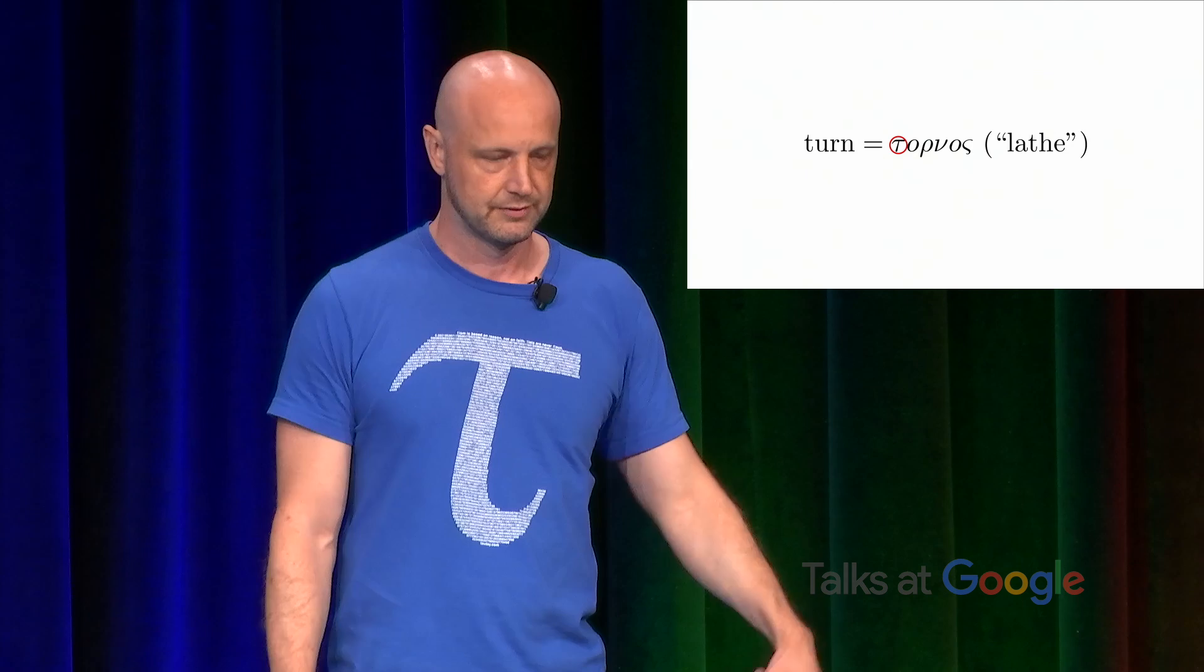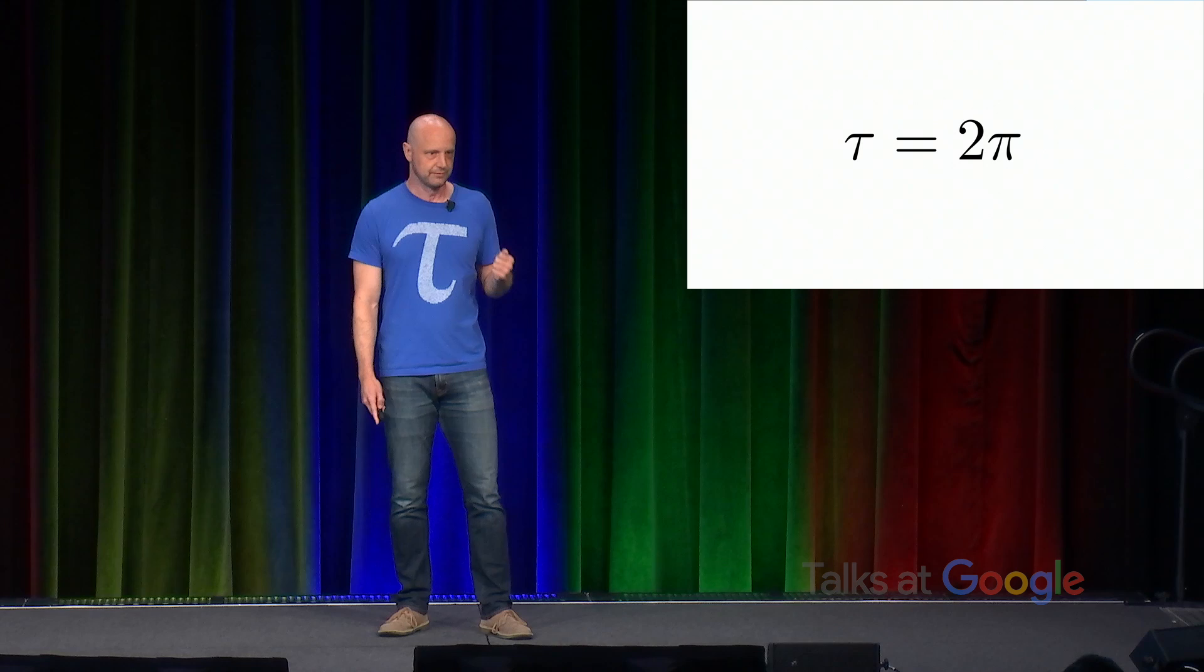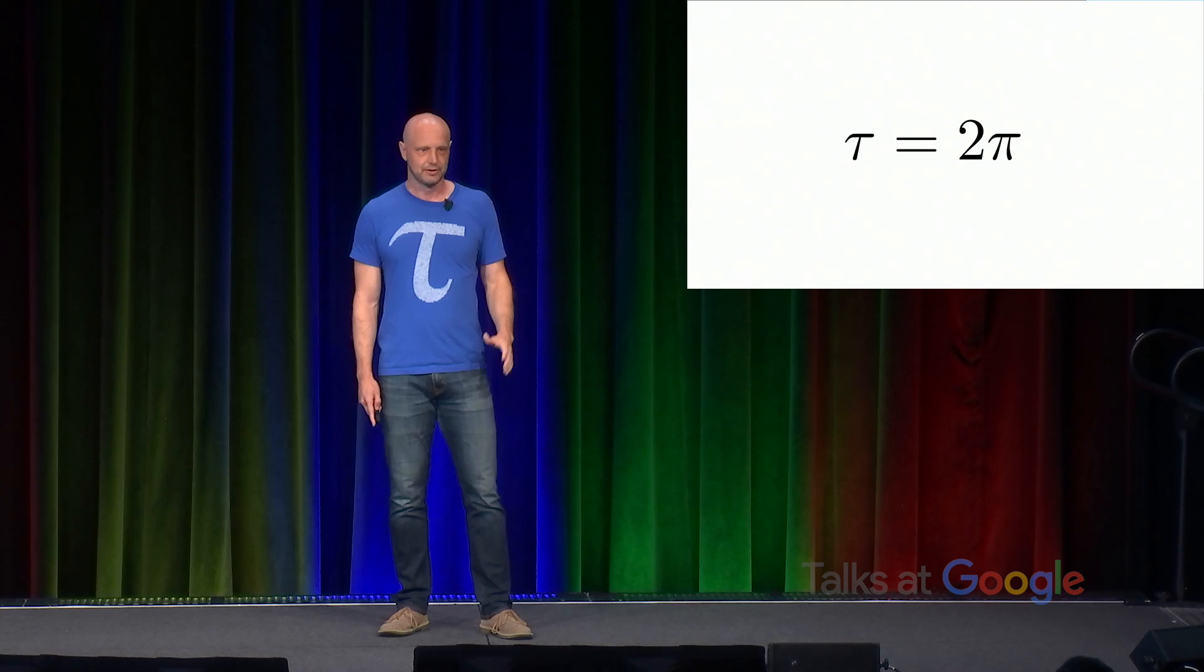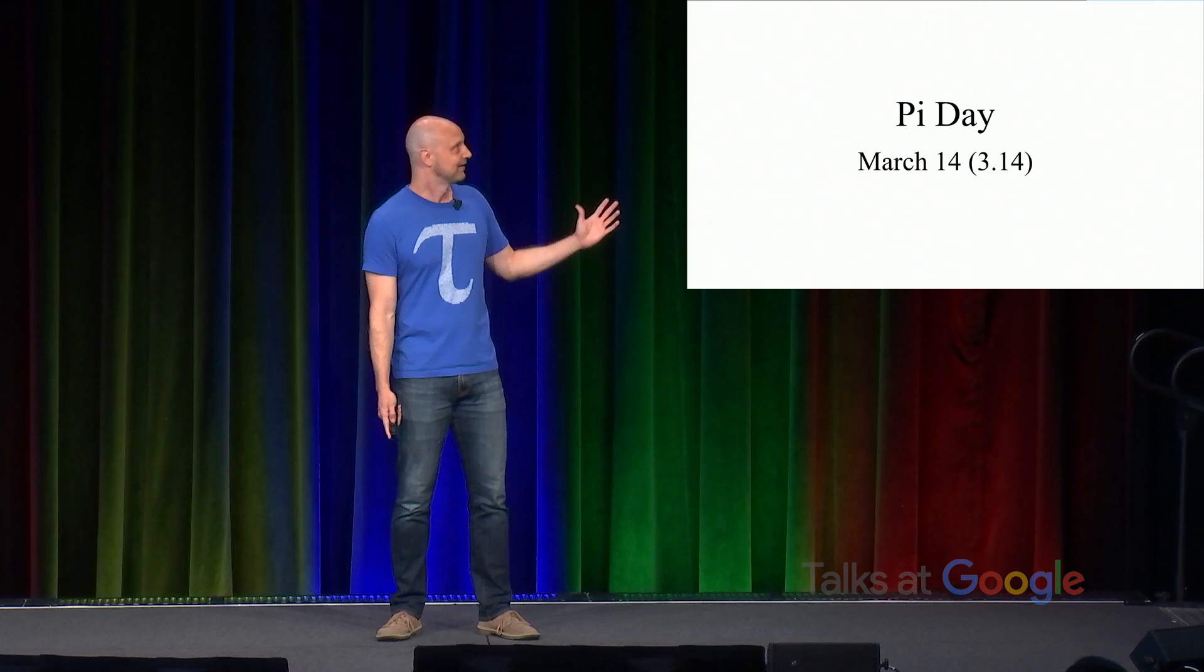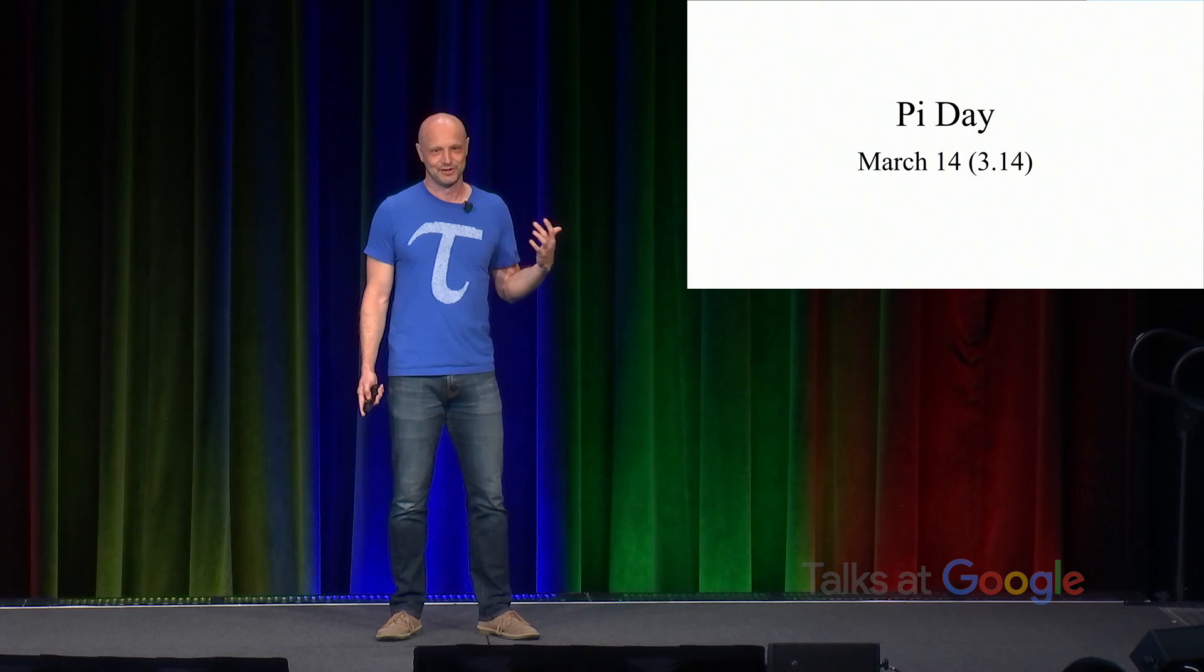So armed with this idea, this new notation, Tau equals two pi numerically, I realized that we also needed a focus for the movement, something that would bring everyone together. And so it's amazing how long it took me to figure out the answer that was obviously correct in retrospect, which was to take Pi Day, which happens on 3-14, and launch a new holiday called Tau Day on June 28th. So on June 28th, 2010, I launched the original Tau Manifesto.